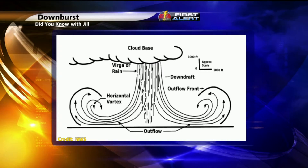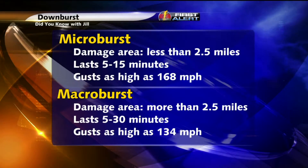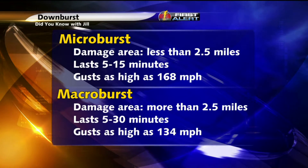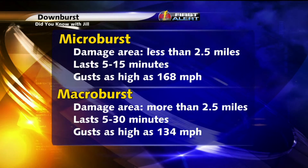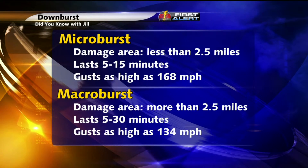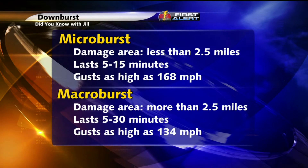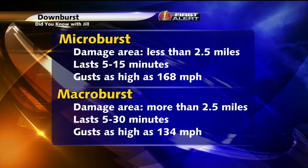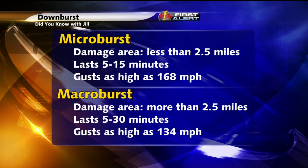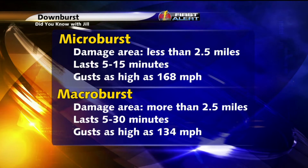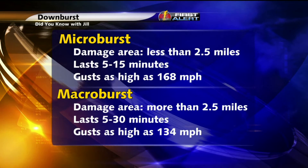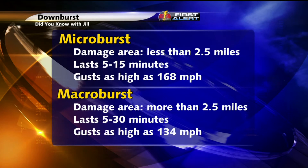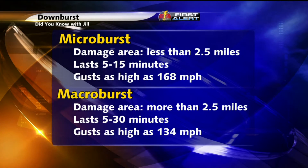That's where we begin to see those damaging wind gusts being produced. The damage pattern is more of a flattening rather than a scattering that we see with tornadoes. Oftentimes the damage can be confused with a microburst, which is one of the damage patterns where the damage area is less than 2.5 miles. These strong storms usually last anywhere from 5 to 15 minutes with wind gusts as high as 168 miles per hour.